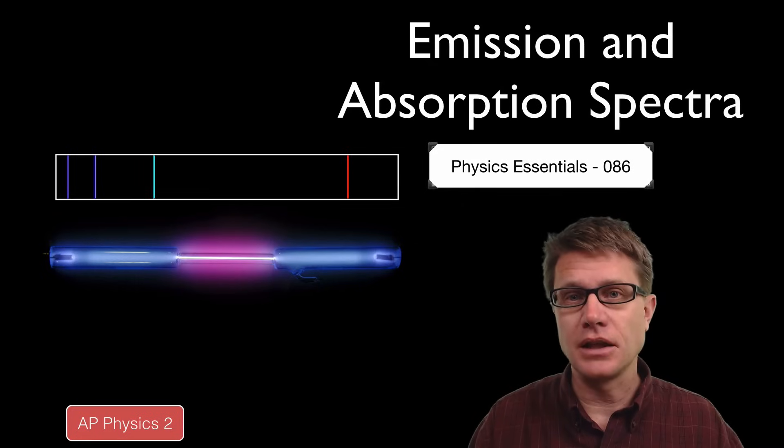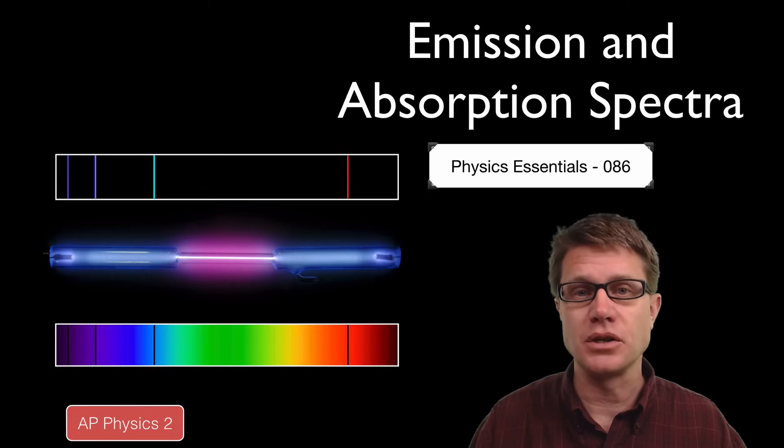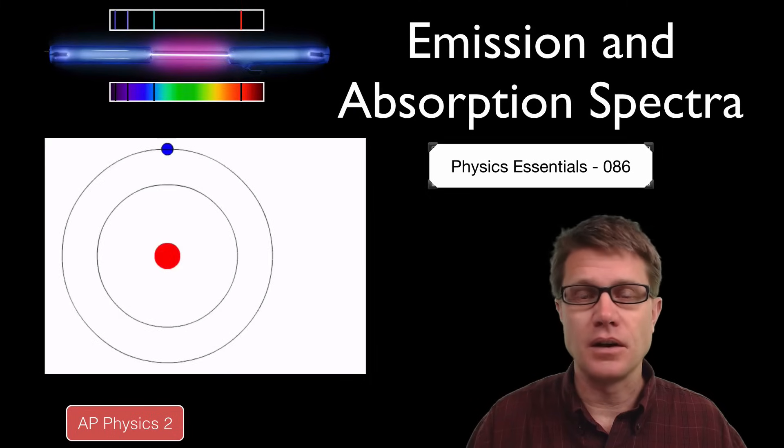We could also shine light through that discharge chamber and parts of it would be absorbed. And so this would be the absorption spectra. So most of the light would make through but some of it is not going to make it through. And this puzzled scientists for a long time until Niels Bohr finally figured it out.